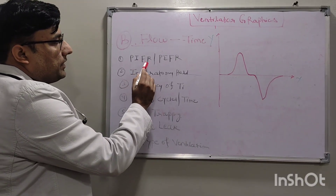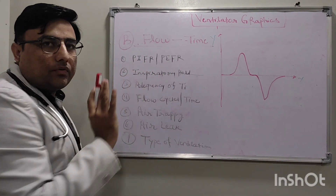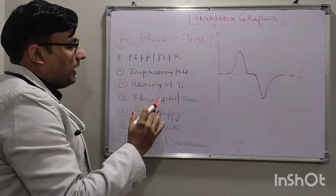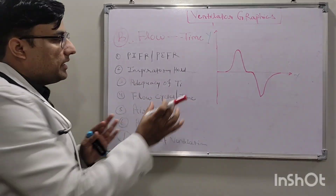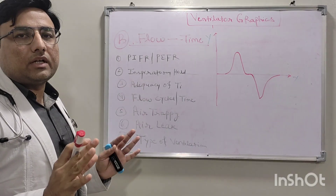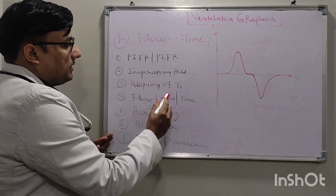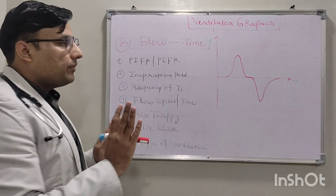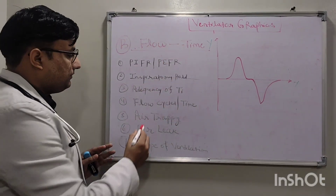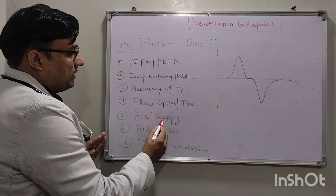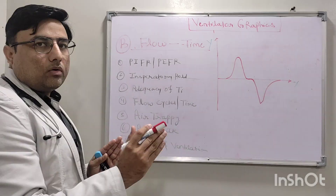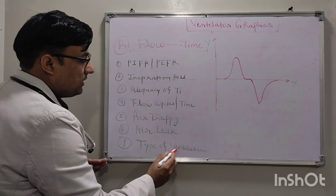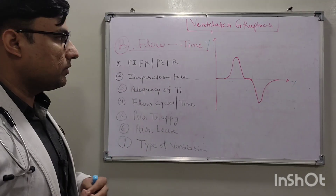First, we can see peak inspiratory flow rate and peak expiratory flow rate. Second, we can see the inspiratory hold, or assess the adequacy of inspiratory time — whether it is adequate or not. We can see whether it is flow-cycle ventilation or time-cycle ventilation. We can also see air trapping or auto-PEEP, air leak, and the type of ventilation — pressure control or volume control.